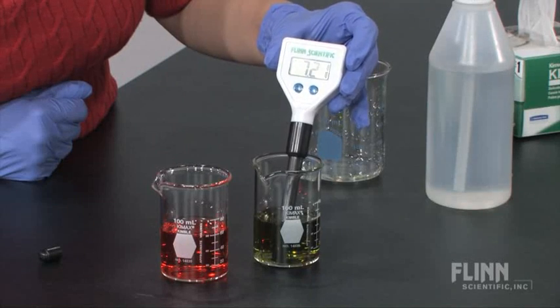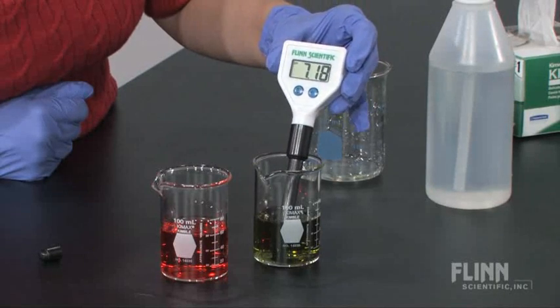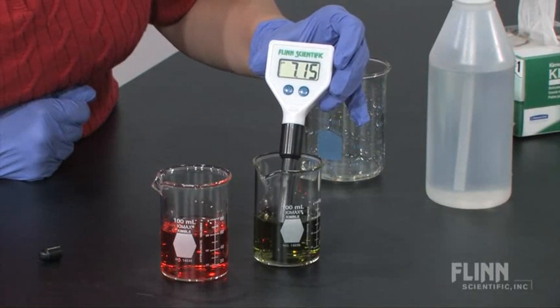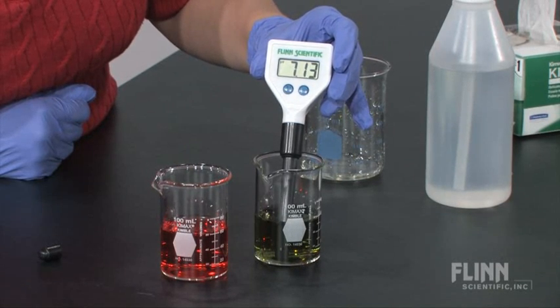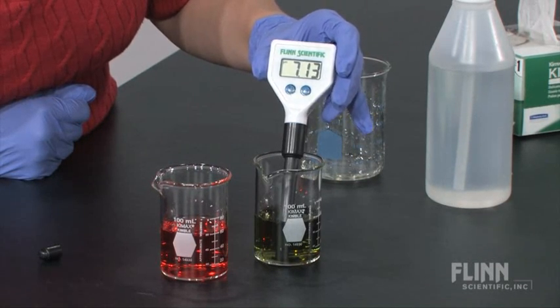The Flynn pH meter has a large, easy to read display and straightforward operation for easy data collection between 0 and 14 at a precision of 0.01 pH units.